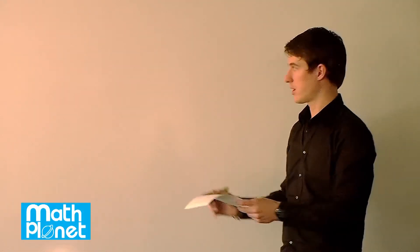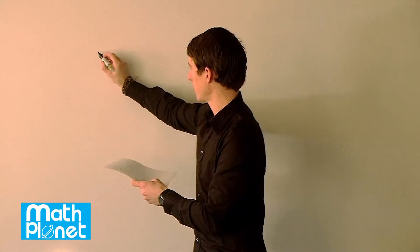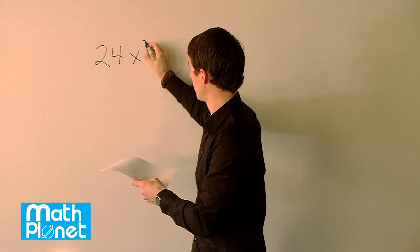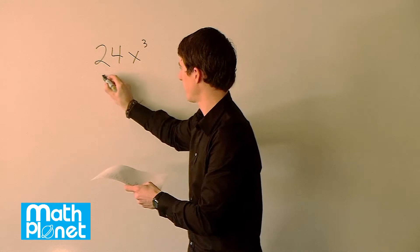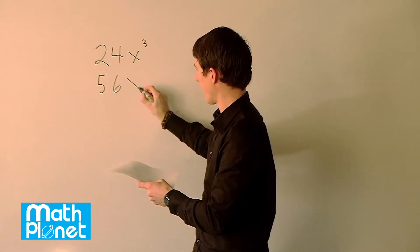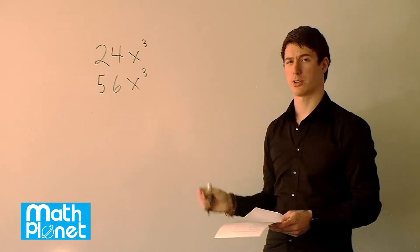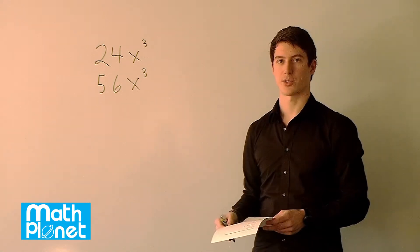If we have two different algebraic terms, one being 24x cubed and one being 56x cubed, we want to expand these as much as possible to determine what the greatest common factor is.